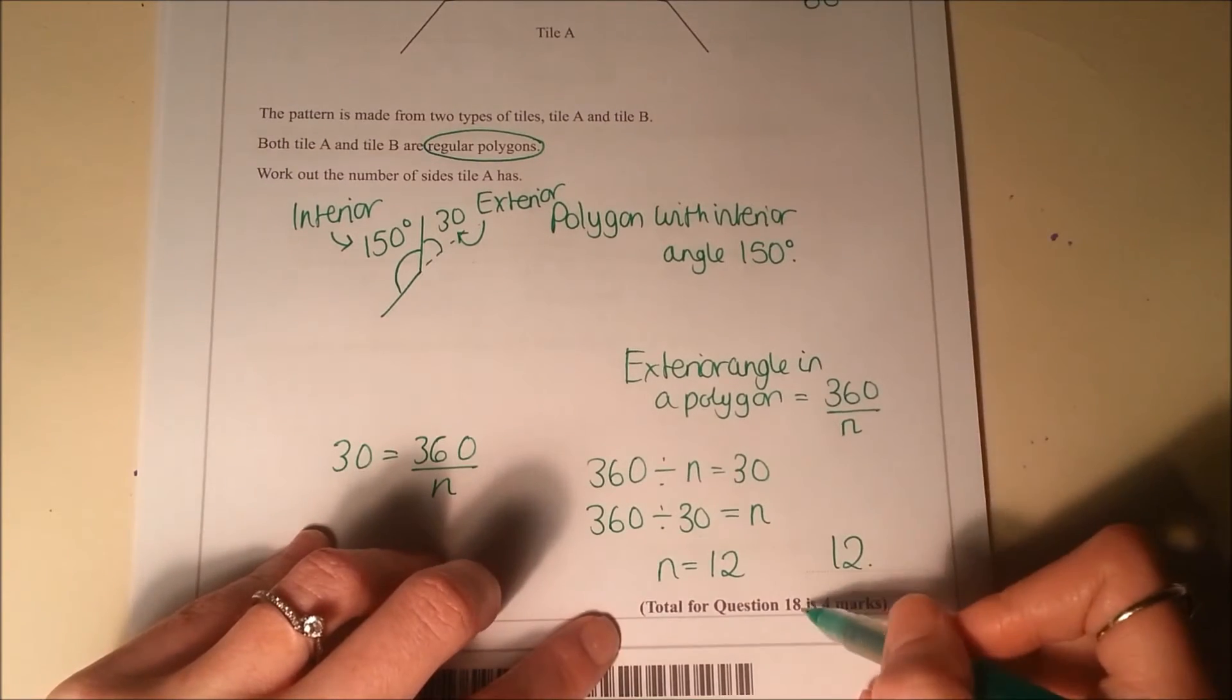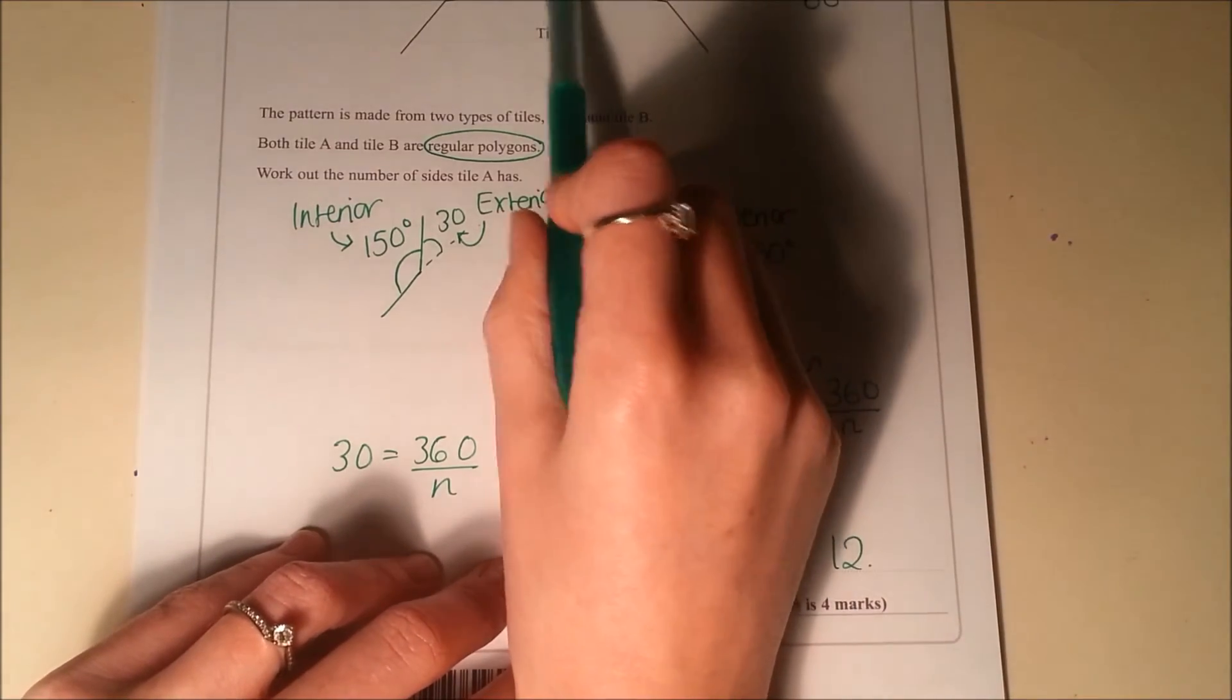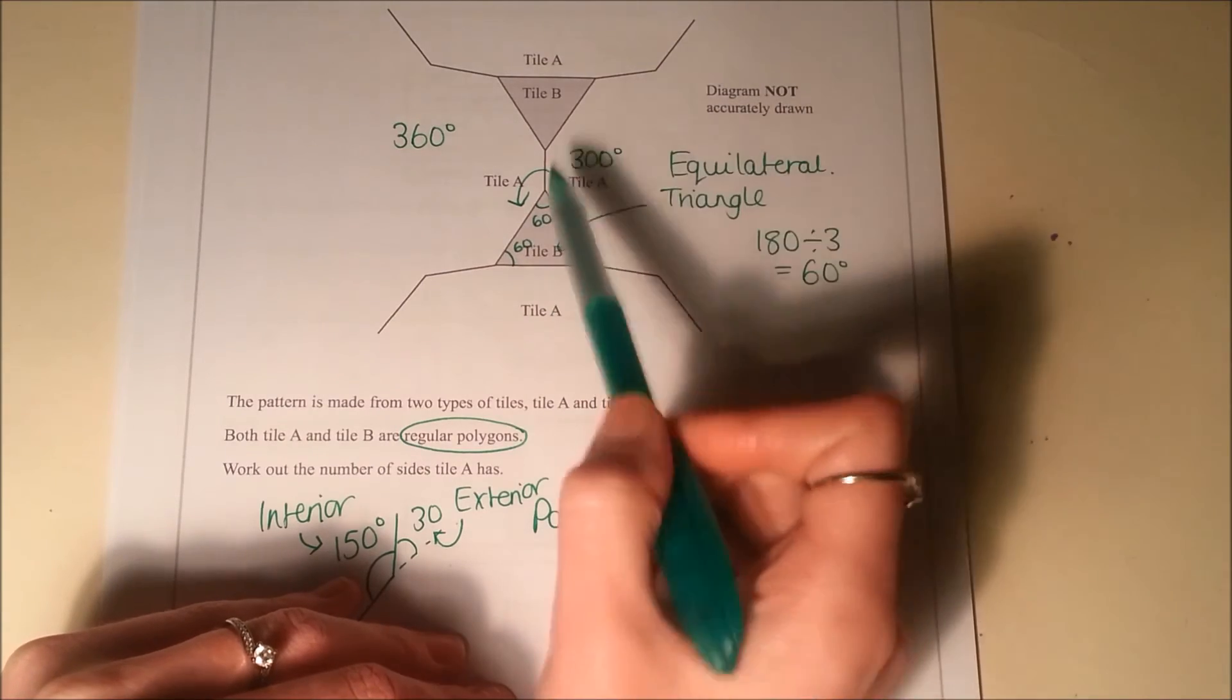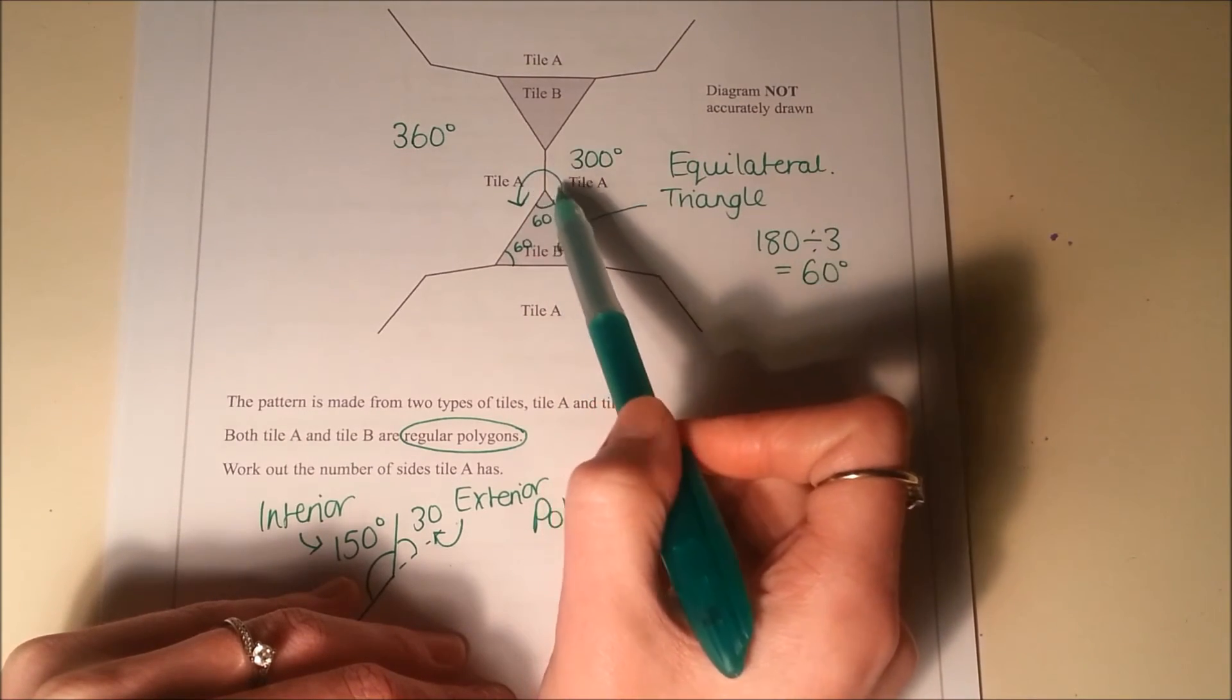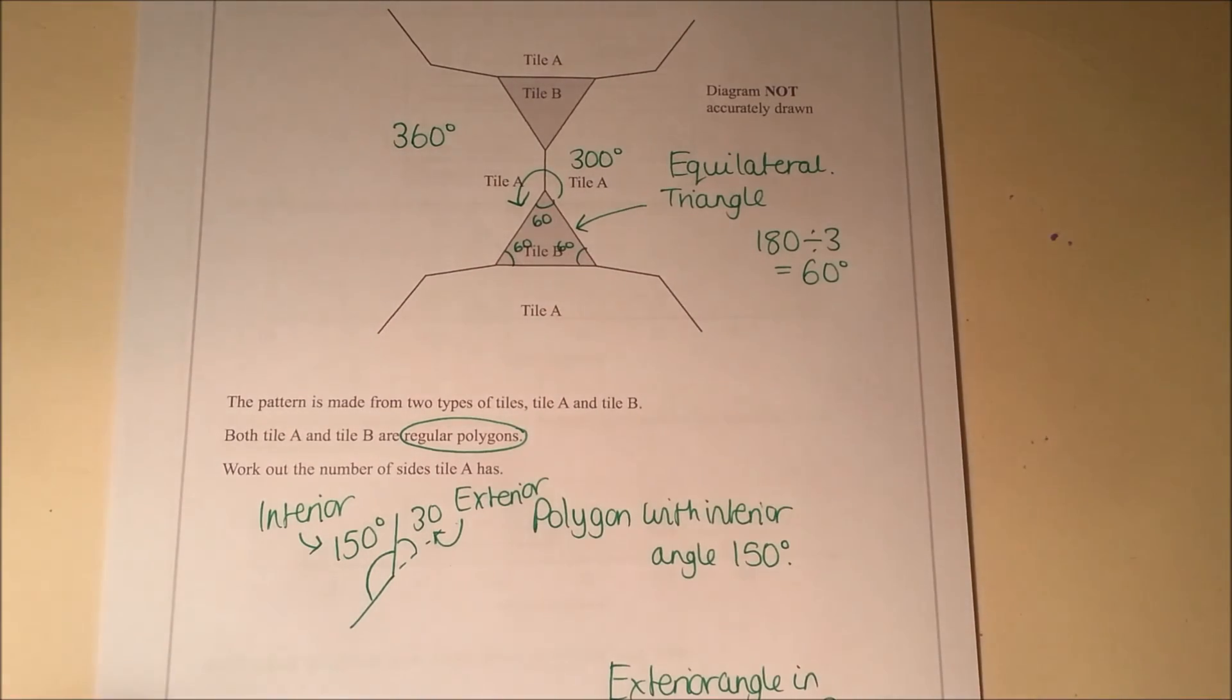Again, it's a 4 mark question, it's quite tricky, a lot of problem solving here. It might be that maybe you can get a pick-up mark for realising what you've got here about your equilateral triangle, for realising that you've got 300 degrees around here, for realising that you've got 150 degree angle. So look for the odd mark that you can pick up.